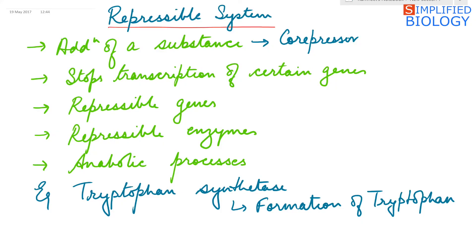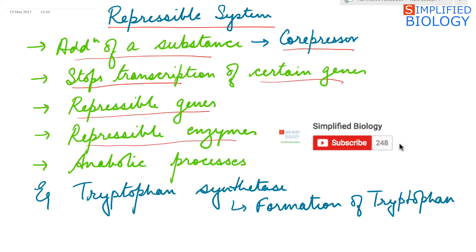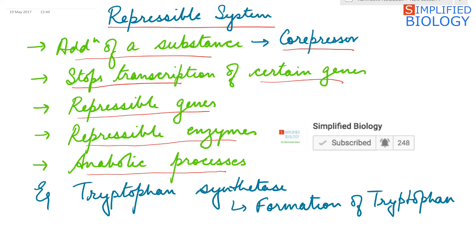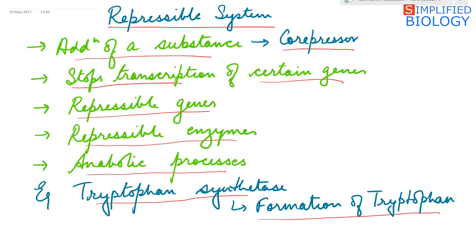In the repressible system, addition of a substance called the corepressor stops the transcription of certain genes. These genes are known as repressible genes. Their enzymes are repressible enzymes and they are always associated with anabolic processes. The example is the tryptophan synthesis enzyme formed for the formation of tryptophan, the amino acid.